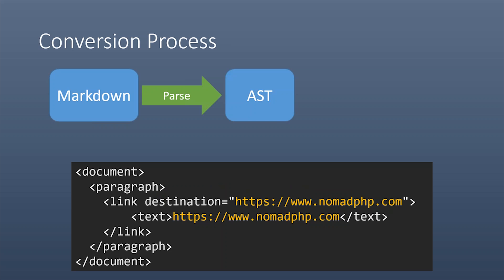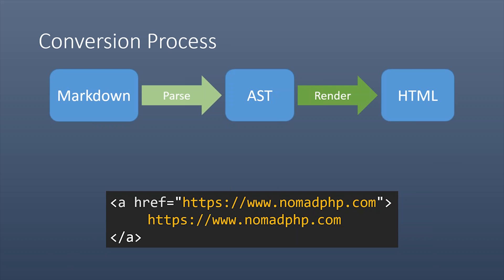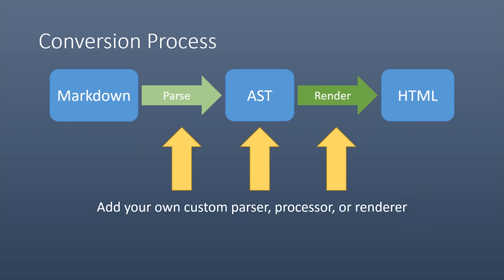Those parsers convert the input into an abstract syntax tree, also known as an AST — basically a tree structure of PHP objects where each object represents a certain type of element. For visualization, imagine those PHP objects represented as XML: a document, inside it a paragraph, inside the paragraph a link with a destination, and inside the link some text. Once we have the final AST, we pass it through to the renderers, which convert the AST into the final HTML. The library allows you to hook into any of these three steps — adding your own custom parser, processor, or renderer.